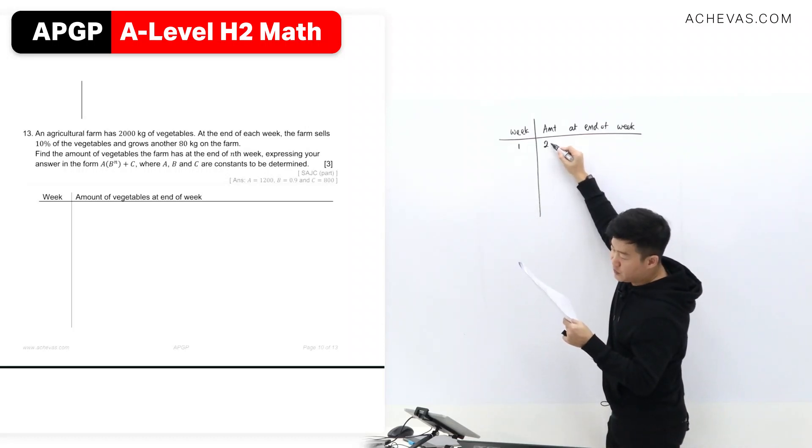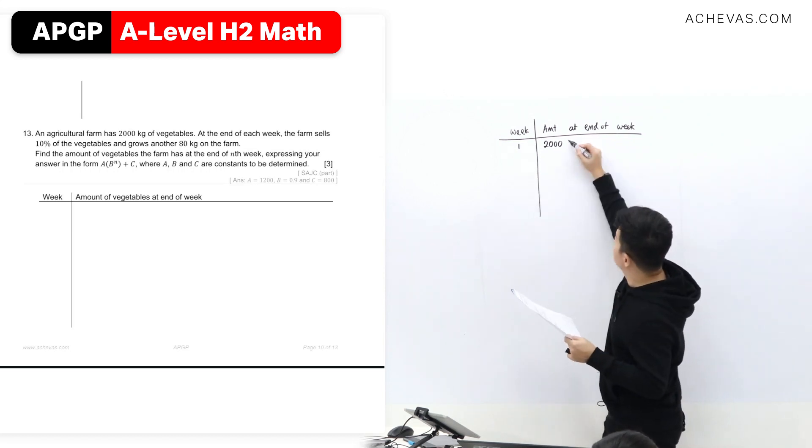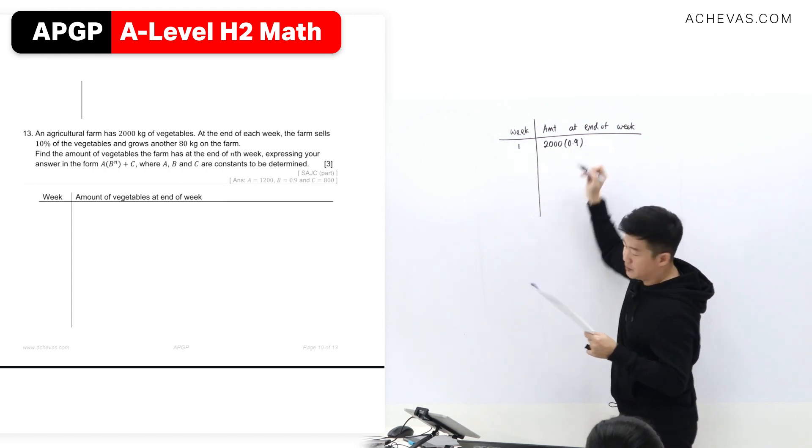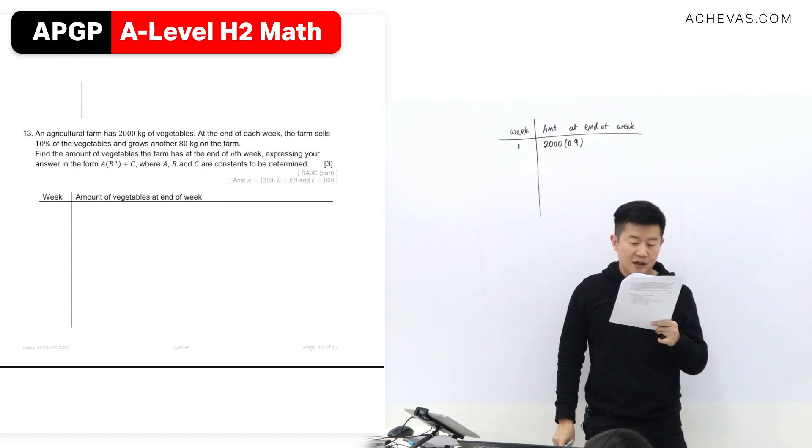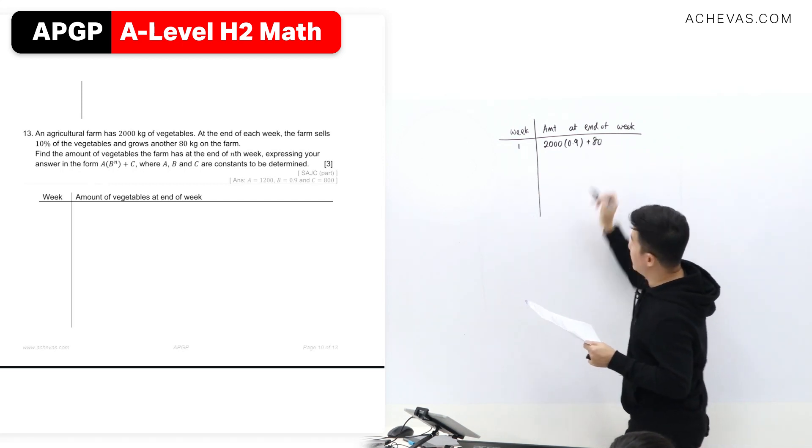The question says that in the first week, the farm will have 2,000 kg of vegetables. By the end of the week, 10% are going to be sold, so I'm going to be left with 0.9. And 80 kg is going to be grown, so this is plus 80.